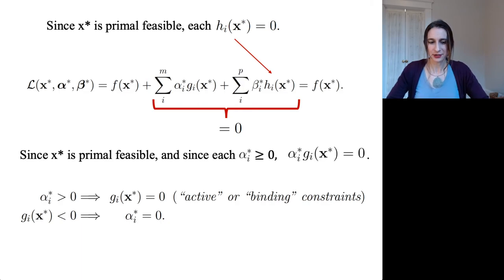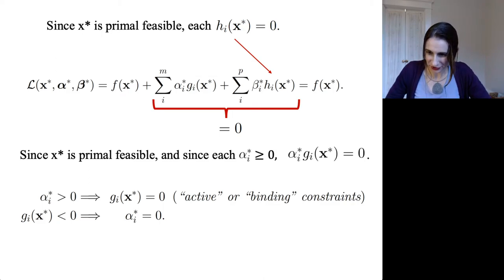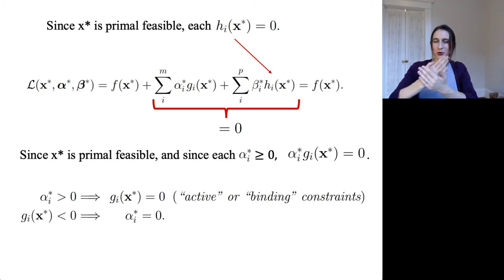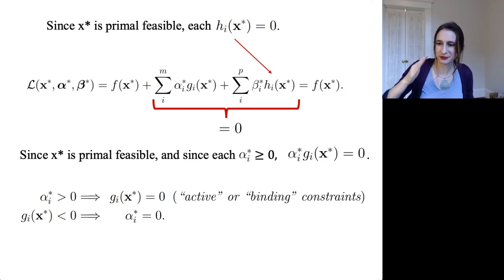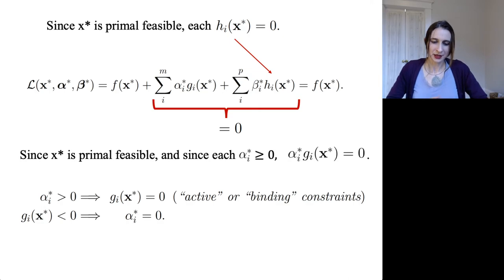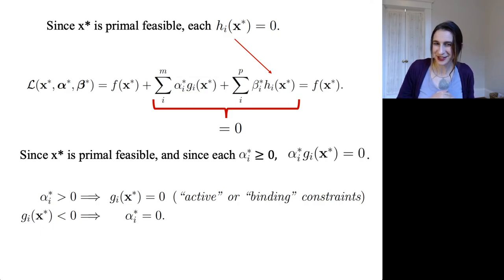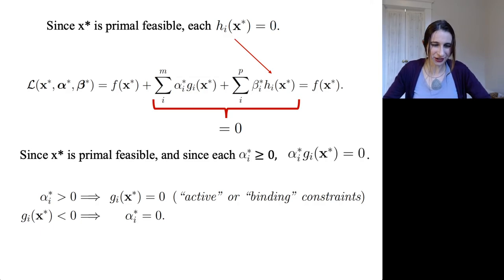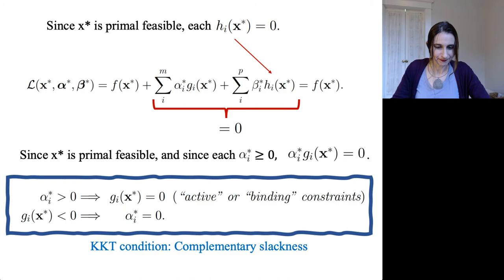These two circumstances have different names. The first type are called active constraints — or binding constraints. If G(x) equals zero, that constraint is hitting at equality; it's not strictly less than zero. And in support vector machines, these are called support vectors. The support vectors are the ones that have binding or active constraints. That is the KKT condition called complementary slackness.